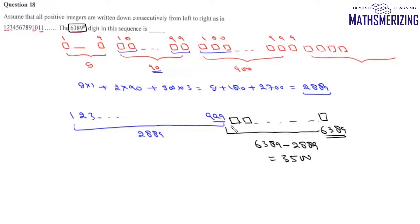Now in this sequence, each number has four digits. So we'll find the number of numbers in this sequence. We'll divide 3500 by 4, and we get 875.